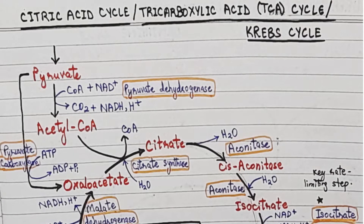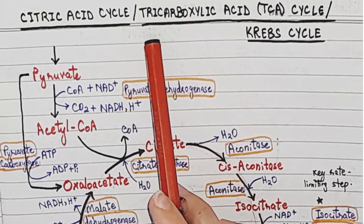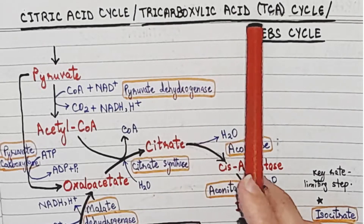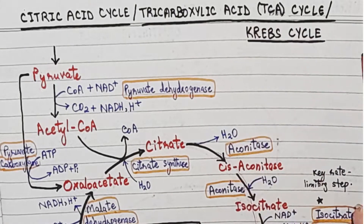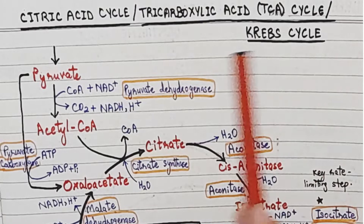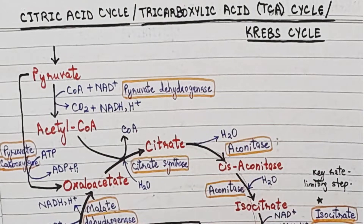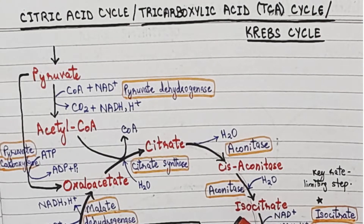Assalamualaikum friends, welcome to my channel. Today we are going to discuss the citric acid cycle, which is also called the tricarboxylic acid cycle, TCA cycle, and Krebs cycle. Don't confuse these three names — if you know any one of them, you will understand the citric acid cycle. This topic is important for exam questions.